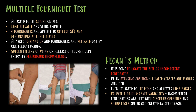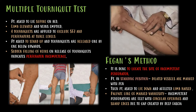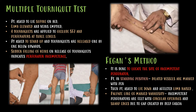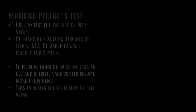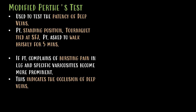Fegan's method is done to locate the site of the incompetent perforator. The patient is in standing position and dilated vessels are marked with a pen. The patient is then asked to lie down and the affected limb is raised. The line of marked varicosity is palpated and incompetent perforators are felt as circular openings with sharp edges due to the gap created by the deep fascia.